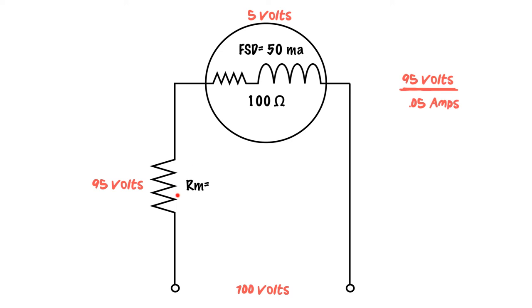So what we can do to determine this resistance is take this 95 volts and divide it by the maximum current we'll see: 95 volts divided by 0.05 amps, which is the same as 50 milliamps, and we can determine our resistor value. In this case that works out to be 1900 ohms.